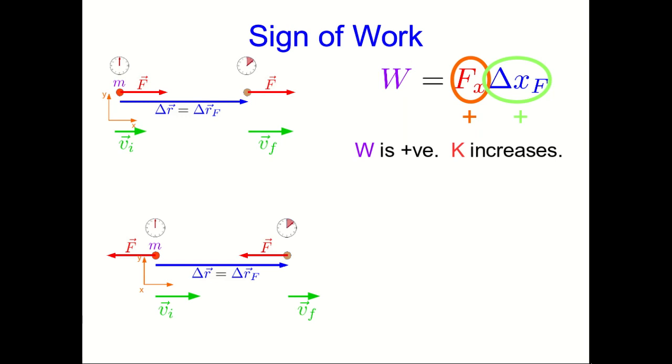Similarly, if it's arranged this way, now that fx is just negative the magnitude of f, and so that's a negative, and so our work comes out negative. The k decreases as we expect.